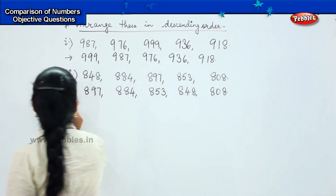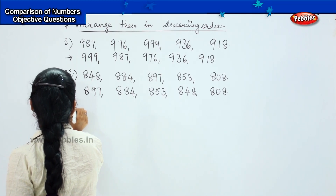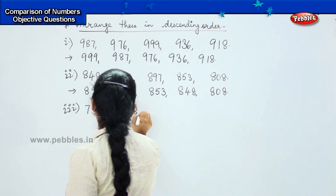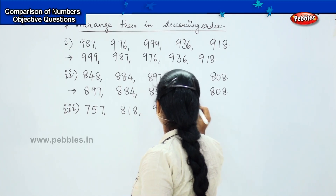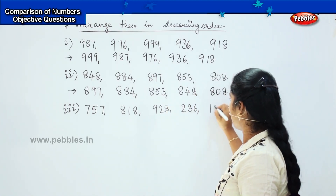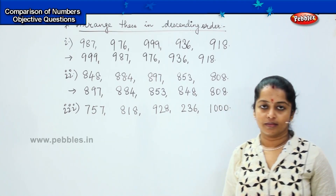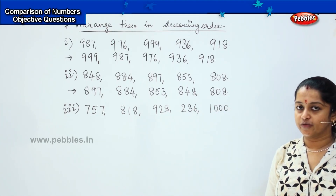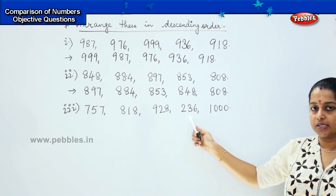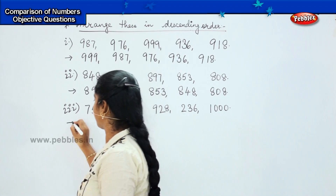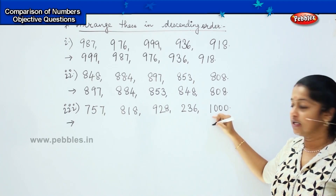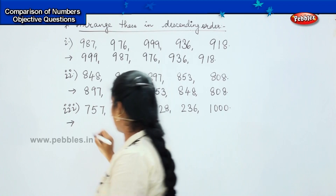Here is my next question: 757, 818, 928, 236, and 1000. Tell me which is the largest of the given numbers. 1000 is the greatest number of all because it is more than hundreds. So we will start with 1000.